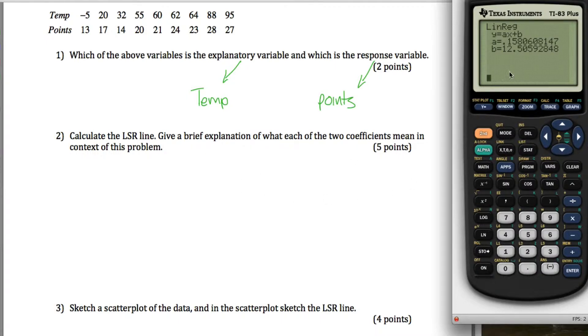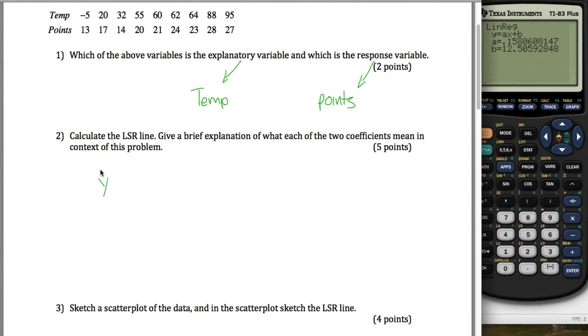It tells you your least squared regression line. It tells you that y hat is equal to a, 0.158 in this example, x plus b, which is 12.5. I'm not too picky on rounding. You can round to any amount of decimal places you want. Just make sure you round it correctly up and down. So here's my least squared regression line.